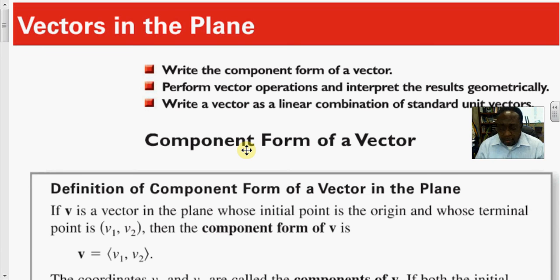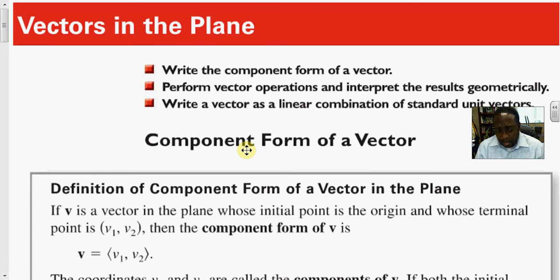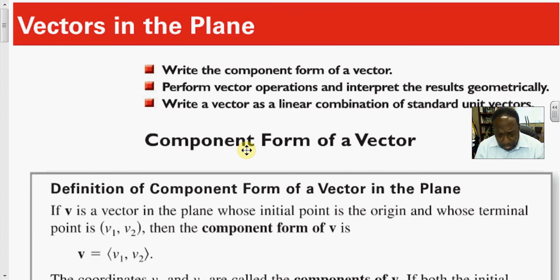We talk about the component form of a vector. What is a vector? A vector is a quantity that has two things: it has to have magnitude, that is, length, and secondly, it has to have direction. That direction is based on where you're coming from and where you're going. Direction can be given in terms of an angle, or in terms of the components representing the x, y, and z axes in terms of i, j, and k, where they denote the position of where the vector is located or the line segment.